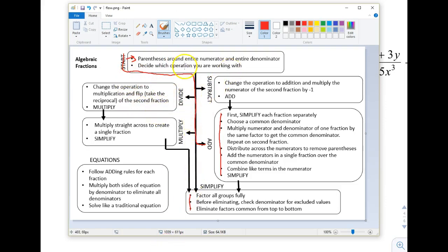Then it says decide what operation you're working with. We are working with addition because there's a plus sign between our two fractions. First thing it says simplify each fraction separately. Then choose a common denominator and multiply the numerator and denominator by the same factor. The whole goal here is get a common denominator. Get the smallest common denominator that you are able to get because the closer you get to that least common denominator the less reducing you'll have to do later on.